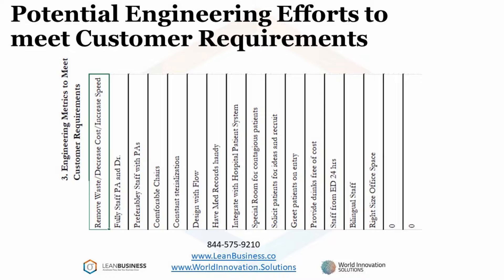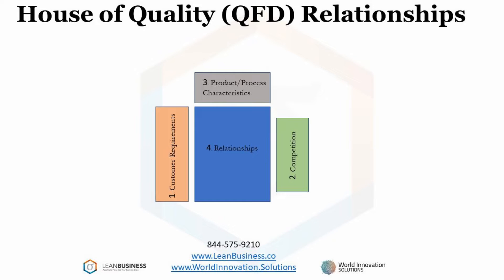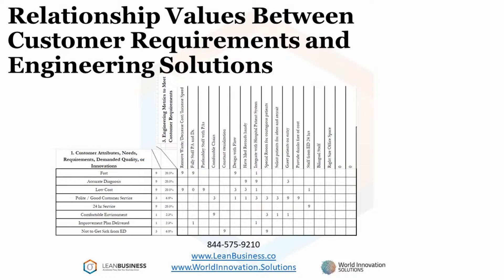Now that the inputs have been documented, we will apply weighting of the correlation between customer need and engineering design. These relationship values are arbitrary and debatable, but very valuable in this process. These correlation values, along with the ratings of the customer needs, lead to key conclusions. A couple of examples are between the customer need of FAST with the engineering effort of removing waste, decreasing cost, and increasing speed. A less strong relationship would be between low cost and the integration of the hospital patient system.